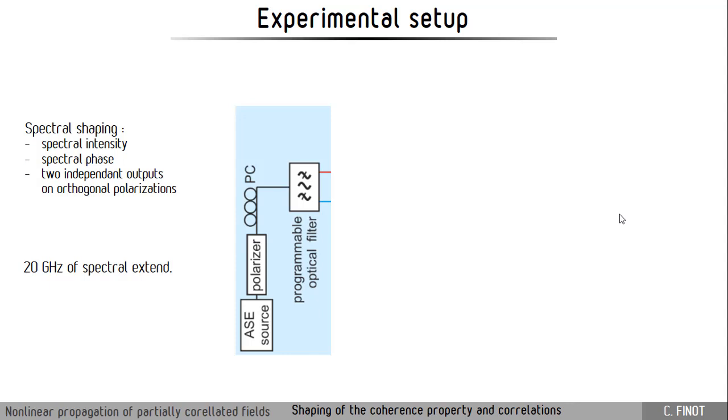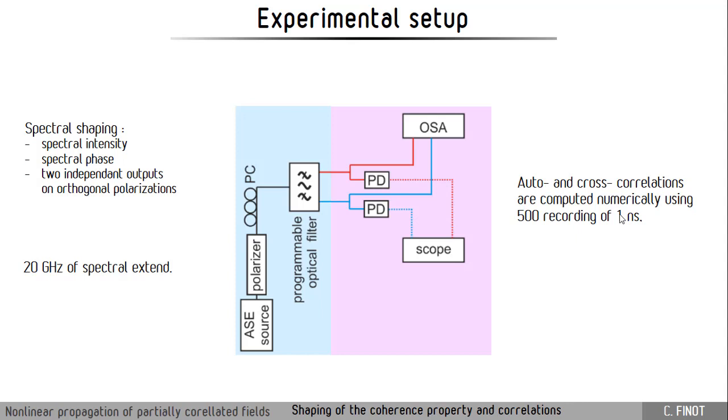Regarding the detection, we are recording the optical spectra and we have detected the pulse trains that we obtained on a photodiode that is linked to a high speed oscilloscope. The results that are recorded on this digital oscilloscope enable us to then calculate the autocorrelation as well as the cross-correlation between the two signals.